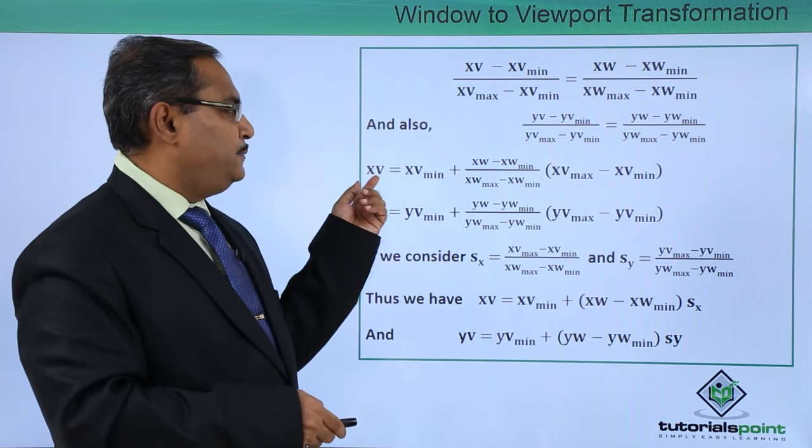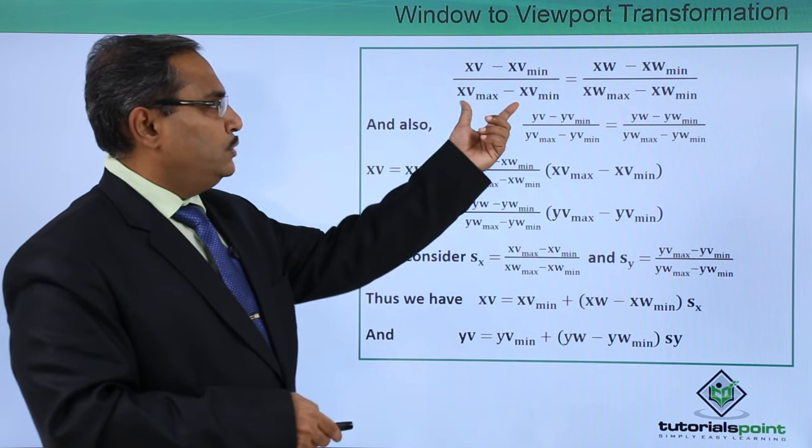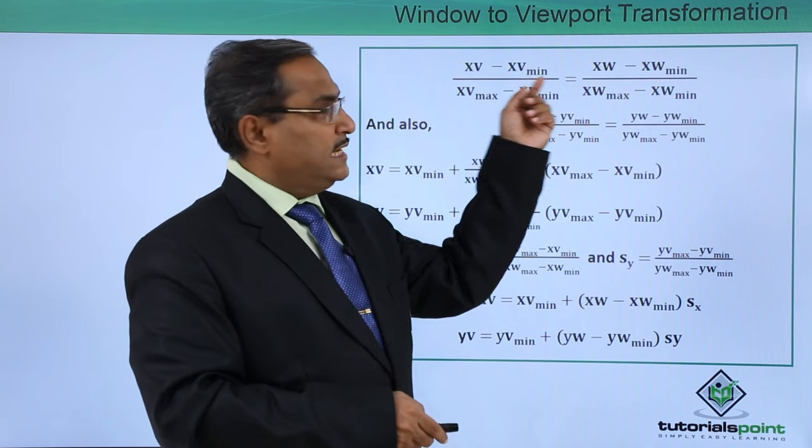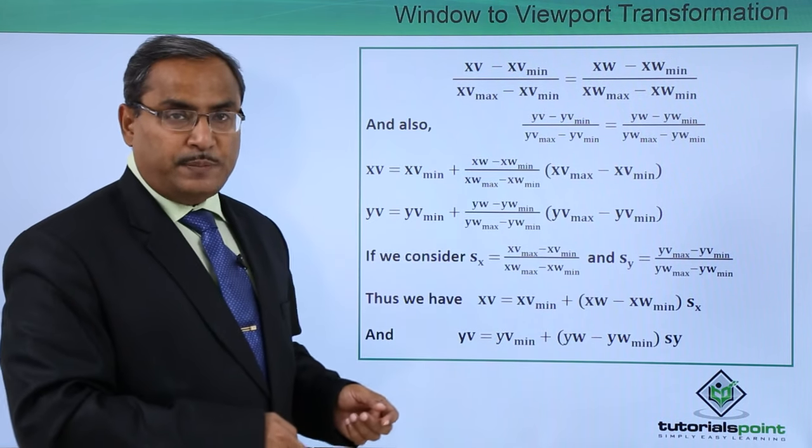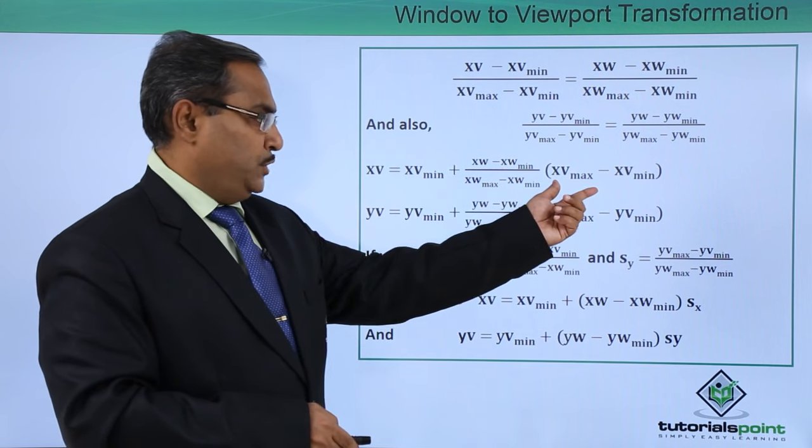Now you can find that XV is equal to, now if I consider only this XV, this part will be going here and XV min minus XV min will be coming here as plus XV min. It will be coming like this XV min plus this expression.